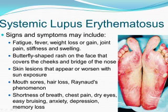No two cases of lupus are exactly alike. Signs and symptoms may come on suddenly or develop slowly, may be mild or severe, and may be temporary or permanent. Most people with lupus have mild disease characterized by episodes called flares, when signs and symptoms get worse for a while, then improve or even disappear completely for a time.